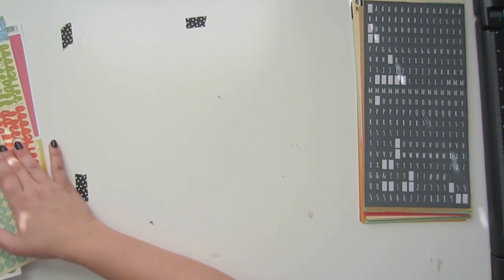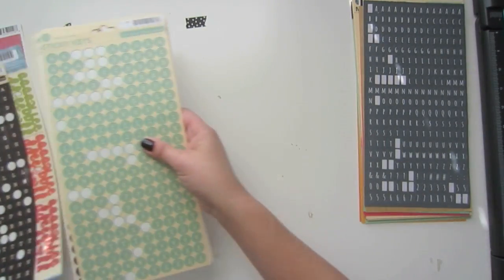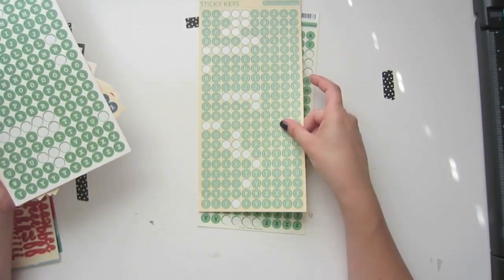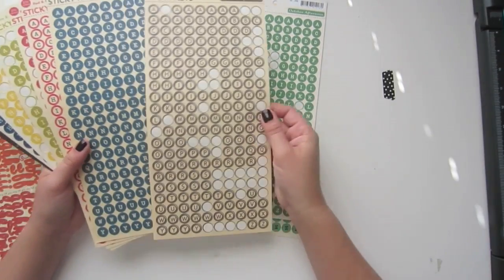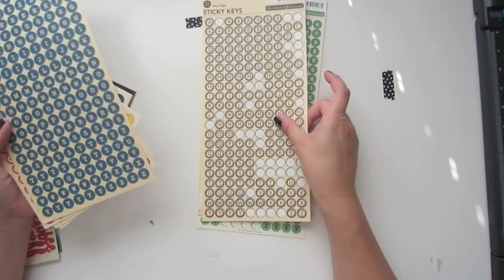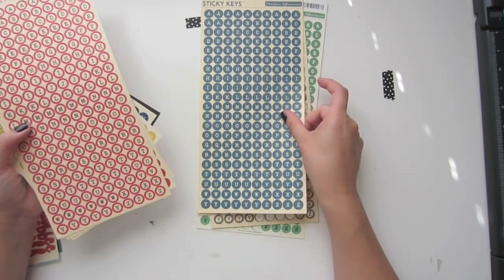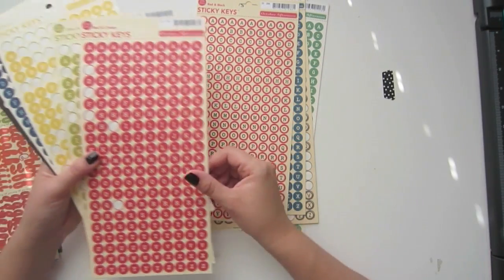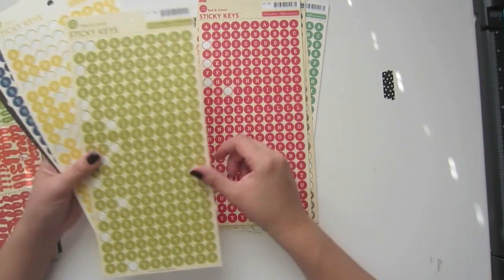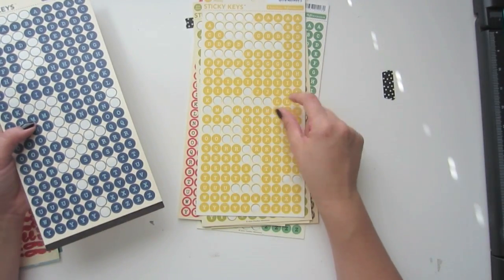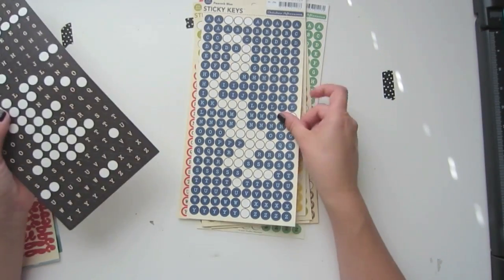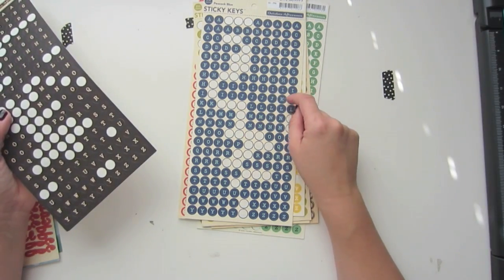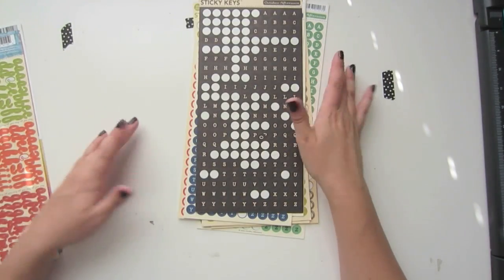The other October Afternoon stickers that they make are called Sticky Keys. These are just round. Here's some green and black, some teal and cream, green and white. These look like little typewriter keys. This one is just a blue and cream, which I haven't used yet. Red and cream, haven't used that. That looks like typewriter as well. There's red and cream, green and cream. Yellow, I love this color yellow. And then this one is like a navy blue with a teal or aqua color letter. And then of course my favorite, the black with the cream.